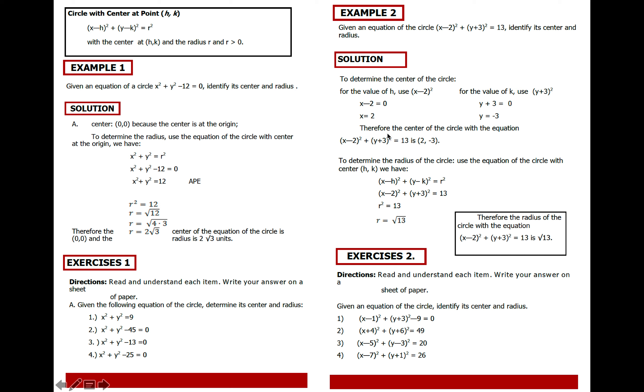h is 2, k is negative 3. Just substitute, h is 2, k is negative 3. In short, the center of the circle, whose equation is given here, is 2 negative 3. Okay? Okay, now we have the center.